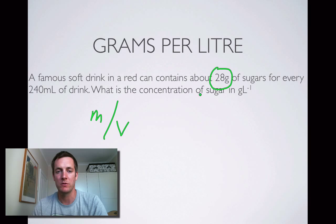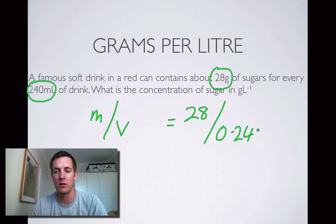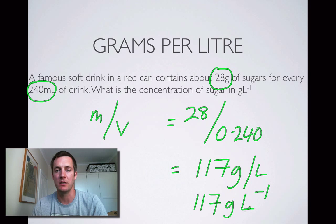Here we have 28 grams of sugar in a famous soft drink, and 240 milliliters of that drink contains this amount of solute. The mass of our solute in grams is 28. The volume of our solution in liters is 0.240, because there are 240 milliliters and 1000 milliliters in a liter. That equals 117 grams per liter. You can write it as g/L or as g·L⁻¹ — they mean exactly the same thing.